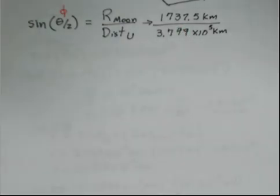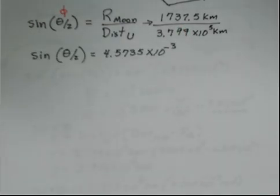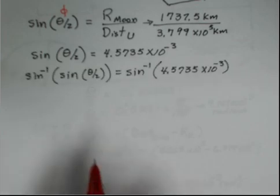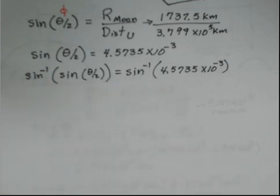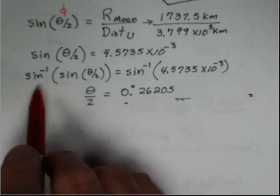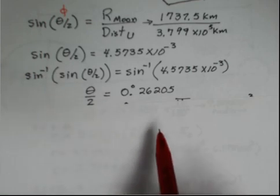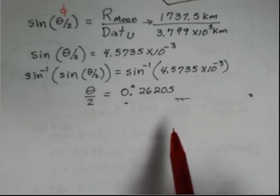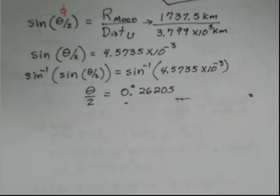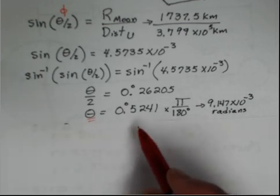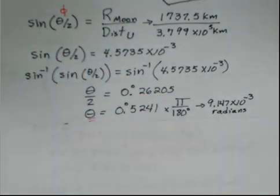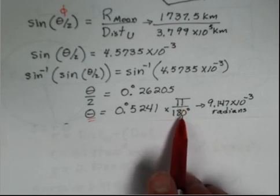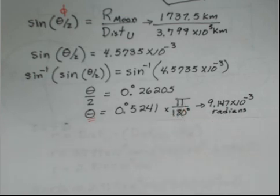So, we put in the numbers, radius of the moon, the length of the umbra that we just previously calculated. Sine of theta over 2 is equal to this number. To find the value of theta, first, take inverse sine of both sides, applying the inverse sine function to both sides. On the left side, the two functions cancel. Inverse sine and sine functions cancel, leaving us with theta over 2. Inverse sine of this number, you could check it on your calculator if you're in degree mode. You'll get 0.26205. And the central angle then, theta, is 0.5241. In the S equals R theta, theta must be in radians. So, I'm converting that to radians with pi radians divided by 180 degrees. So, 9.147 times 10 to the minus 3 radians.